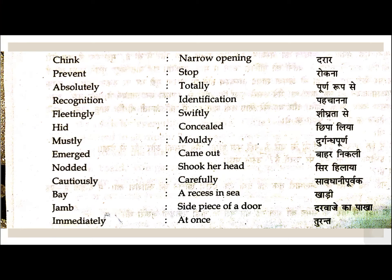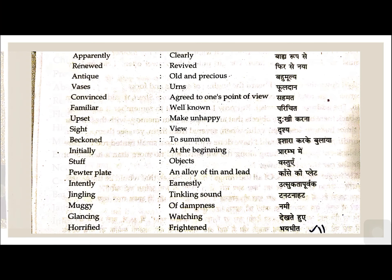Bay — area in sea. Jamb — side piece of a door. Immediately — at once. Apparently — clearly. Renewed — revived. Antique — old and precious. Vases — urns. Fully done — convinced.